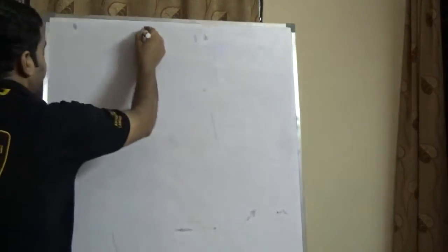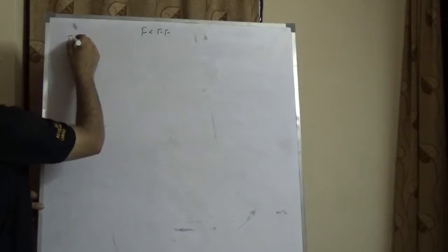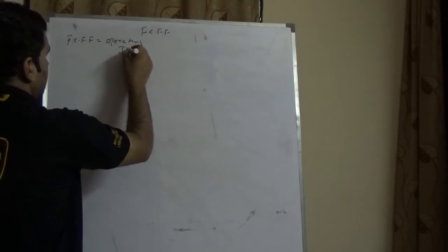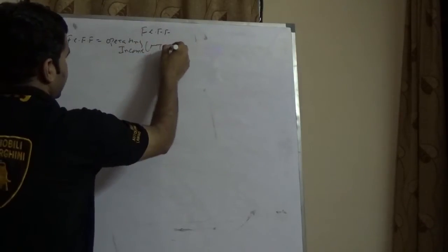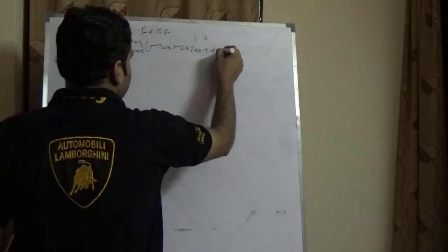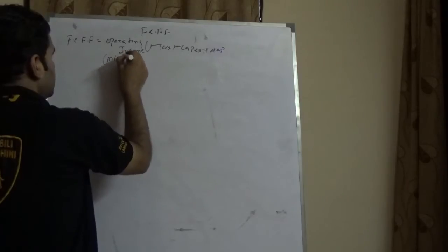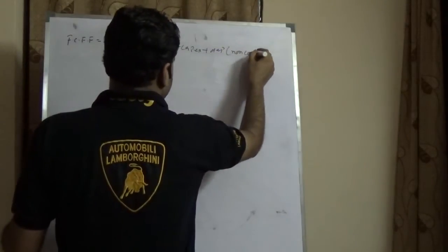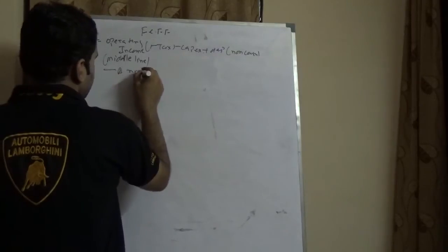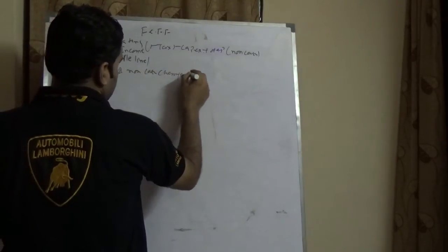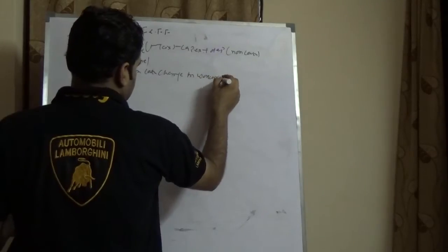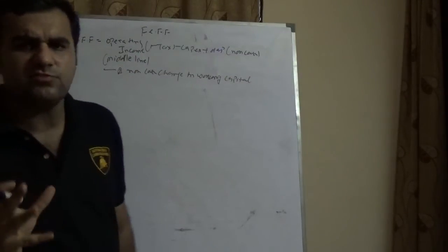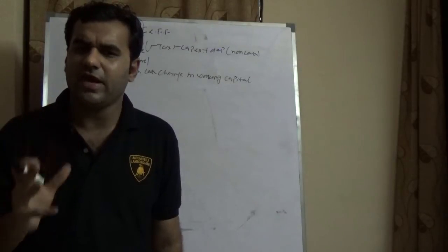What do you mean by free cash flow to the firm? The valuation formula for free cash flow to the firm is: operating income multiplied by (1 minus tax), minus capex, plus depreciation — which is also known as non-cash expenditure — minus delta non-cash change in working capital.